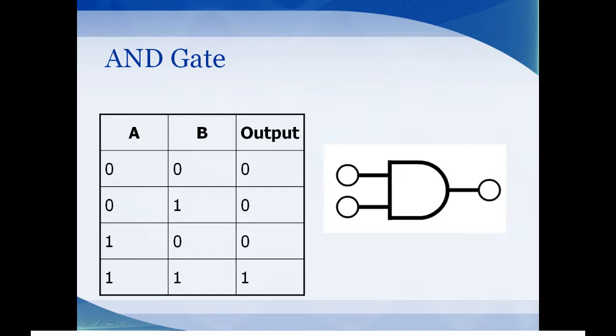The AND gate logic is very similar to the English word AND. For example, if your boss at work says to you, if you're on time to work and you get the reports done, then I'll give you a raise. Well, he used the word AND, so you have to be on time and you have to get the reports done if you want that raise.